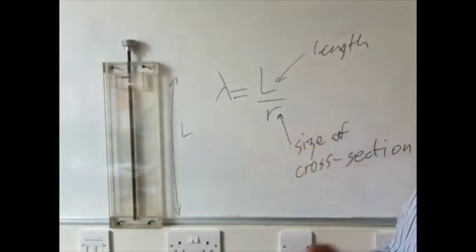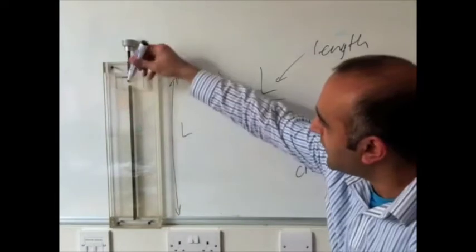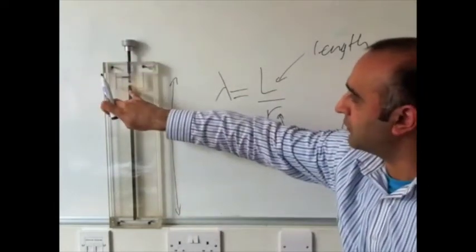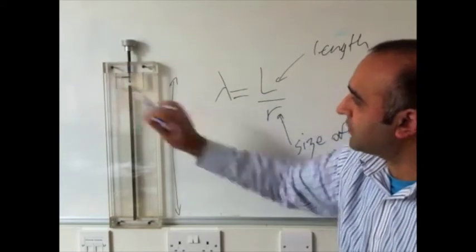So the size of the cross-section here means the size of the rod itself in cross-section. So, for example, it has a certain width, might be about 5 millimeters, and a certain depth, about 10 millimeters.